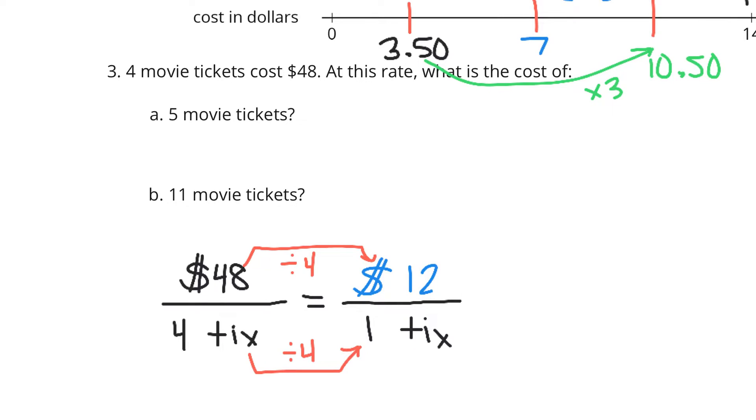Well, 4 divided by 4 gets me to that 1 ticket. So if I take 48 and divide it by 4, that gets me $12 for the 1 ticket. And once I know that it's $12 for 1 ticket,